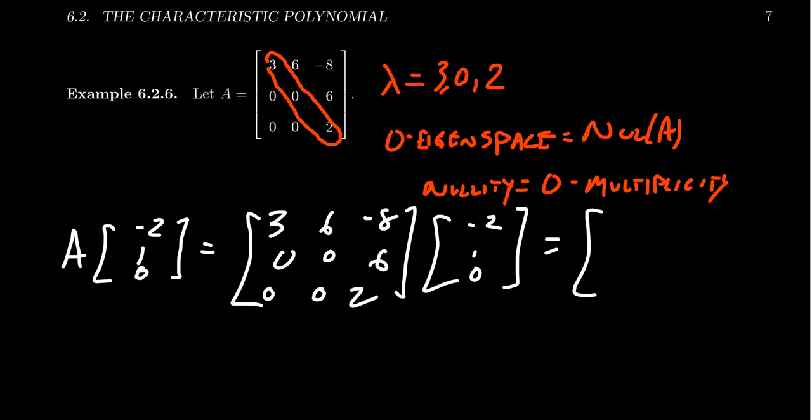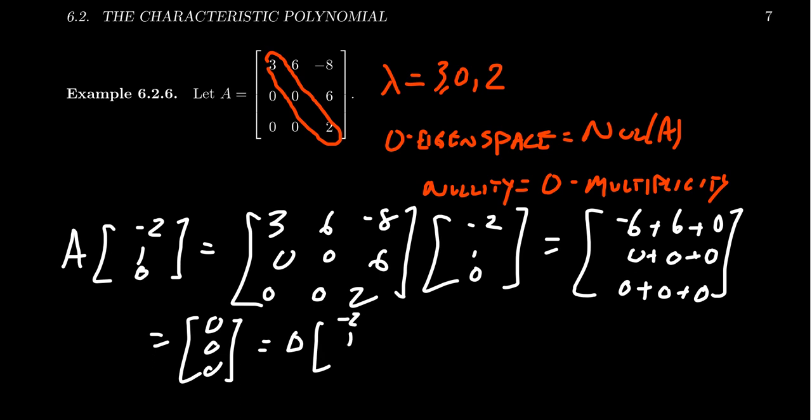If we do the matrix multiplication here, we're going to end up with negative 6 plus 6 plus 0. We're going to get 0 plus 0 plus 0. And we end up with 0 plus 0 plus 0. When you simplify that, you end up with 0, 0, 0, which is 0 times the original vector, negative 2, 1, 0.